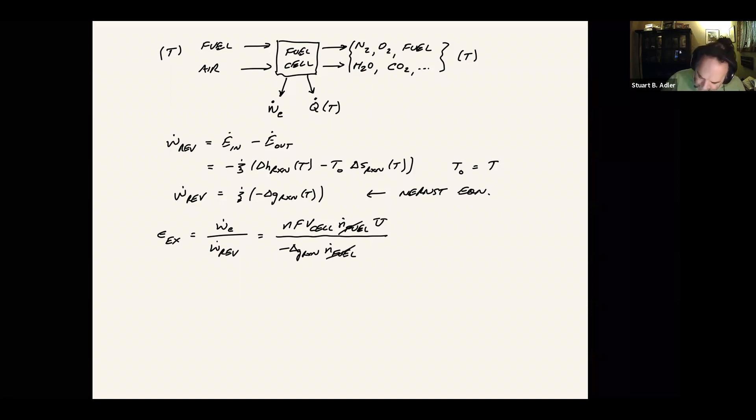And then I'm also going to divide by N F and then multiply by N F. And that gives us this quantity right here as the reversible cell potential. So we'll work all this out. Epsilon exergetic ends up being fuel utilization times V cell divided by V ref or V equilibrium, which is coming from the Nernst equation.